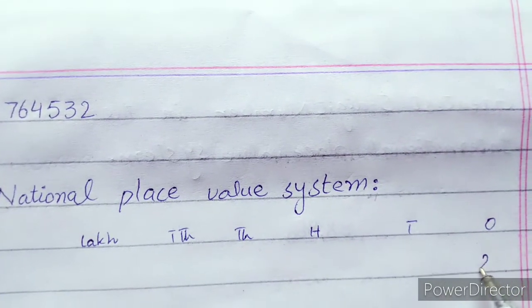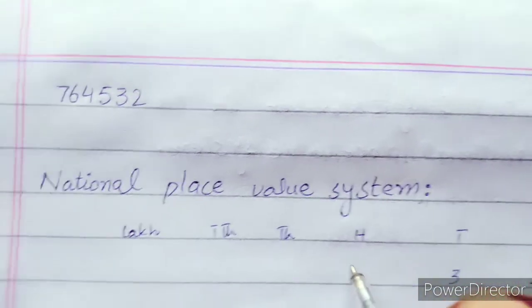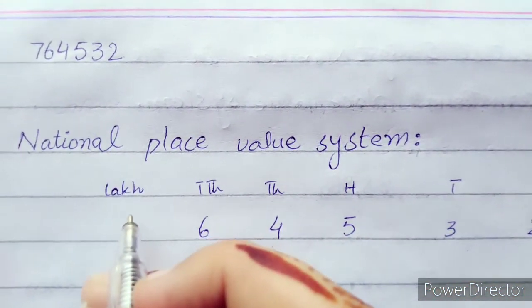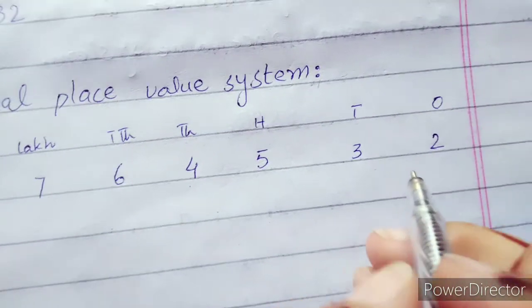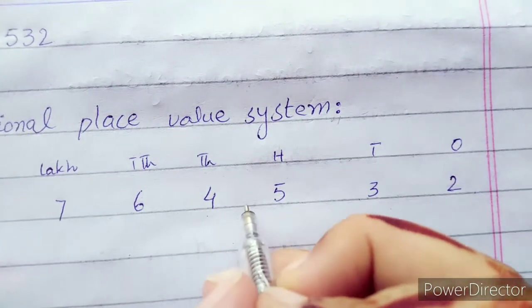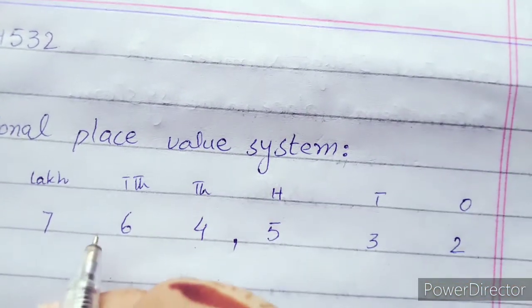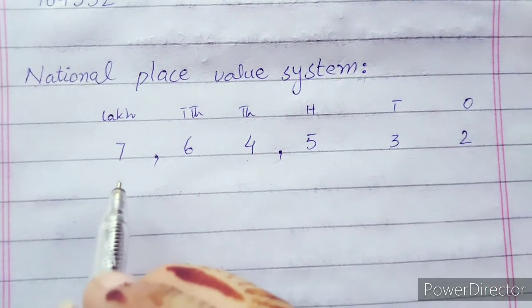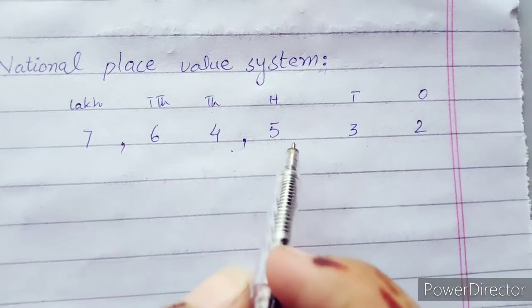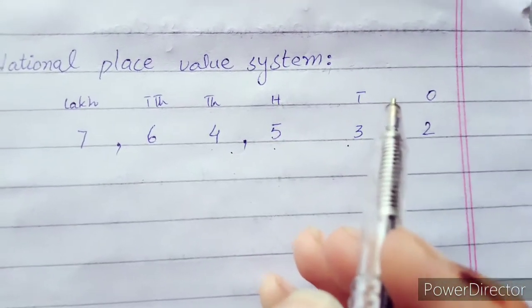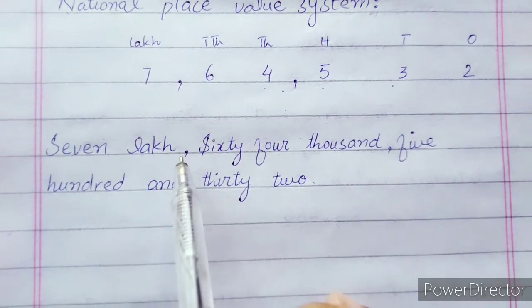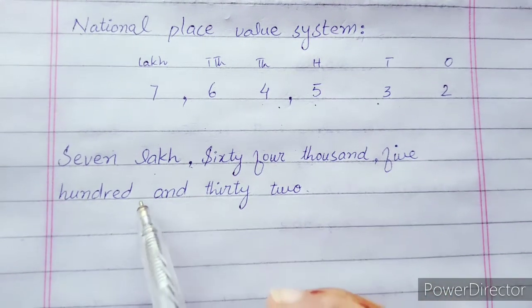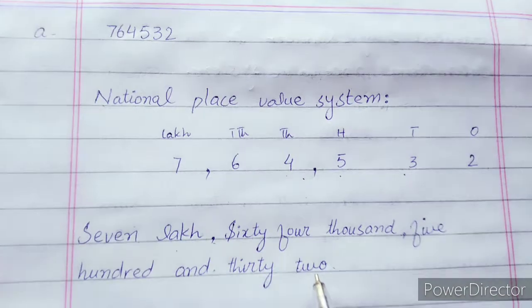Now let's look at the number 764532. Ones place is 2, tens place is 3, hundreds place is 5, thousands place is 4, ten thousands place is 6, and lakh place is 7. In national place value, after hundreds we put the first comma, then after two digits we put another comma. The number name is seven lakh sixty four thousand five hundred and thirty two.